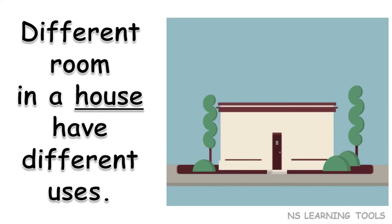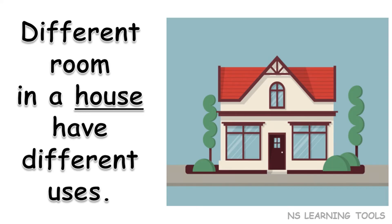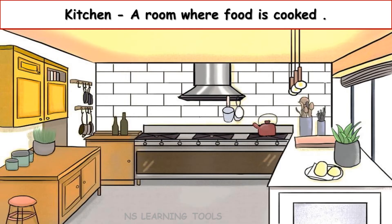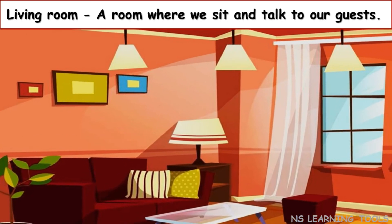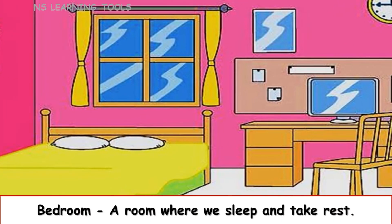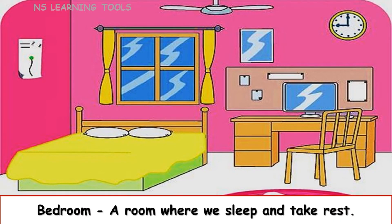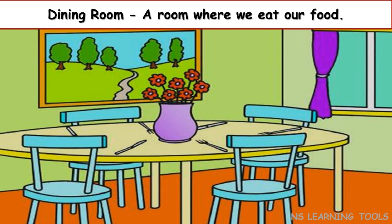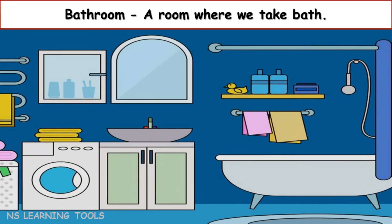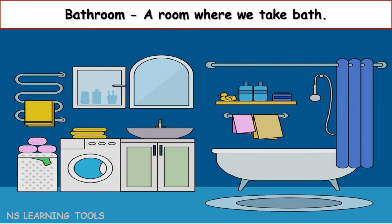Different rooms in a house have different uses. Kitchen: a room where food is cooked. Living room: a room where we sit and talk to our guests. Bedroom: a room where we sleep and take rest. Dining room: a room where we eat our food. Bathroom: a room where we take a bath.